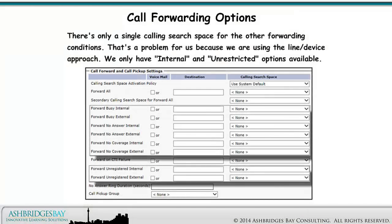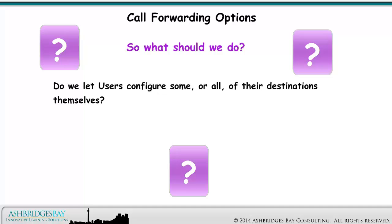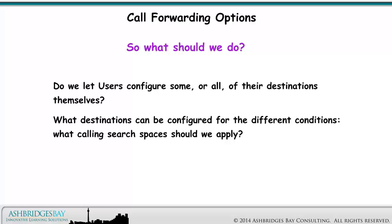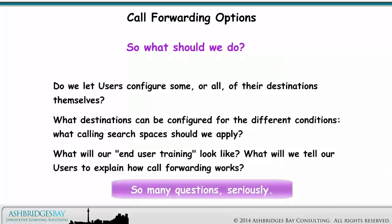There's only a single calling search space for the other forwarding conditions. That's a problem for us because we are using the line device approach — we only have internal and unrestricted options available. Our implementation of mobility affects how we configure this. So what should we do? Do we let users configure some or all of their destinations themselves? What destinations can be configured for the different conditions? What calling search spaces should we apply? What will our end user training look like, and what will we tell our users to explain how call forwarding works?